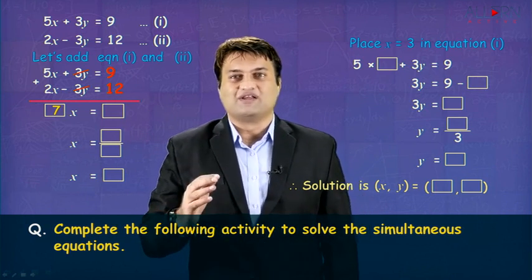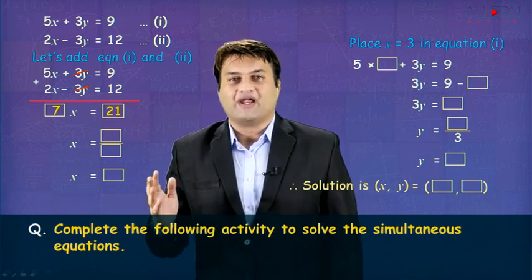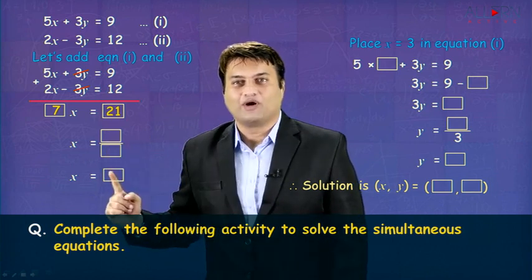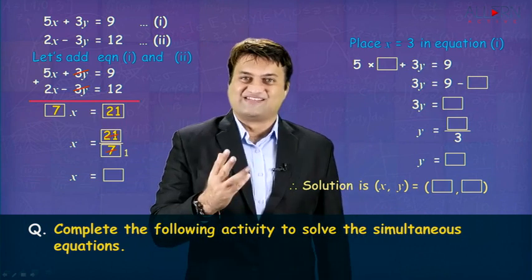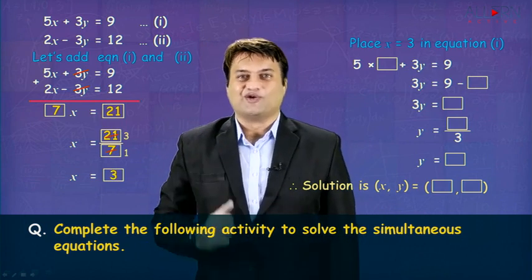Once you get 7x is equal to 21, now you get x is equal to 21 upon 7. So you get x is equal to 3.